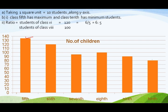Which class has minimum number of children? That is class 10th — 10th mein sabse kam bachche hain. Next, find the ratio of students of class 6 to class 8. Students of class 6 upon students of class 8 is 120 upon 100, which simplifies to 6 upon 5. So the ratio is 6:5.